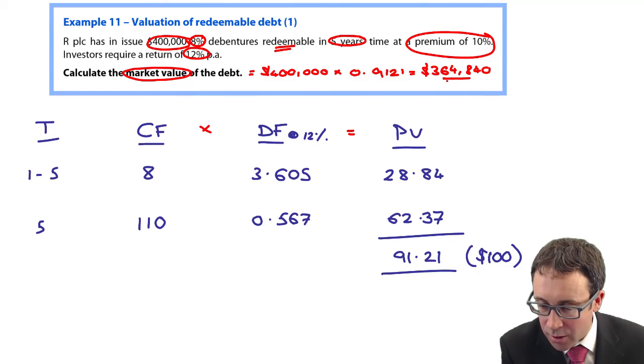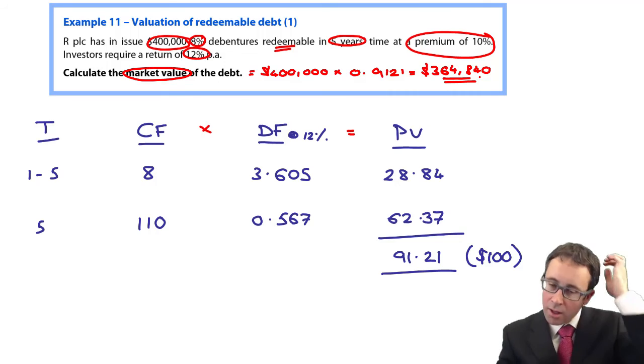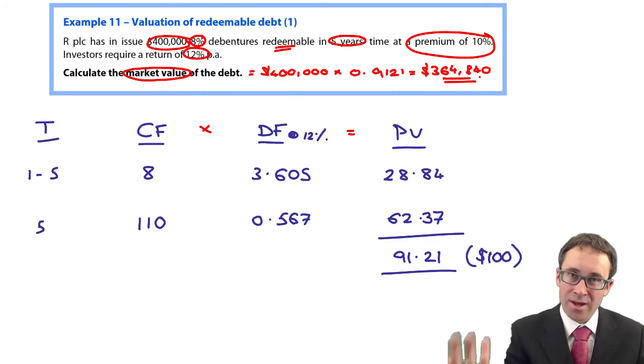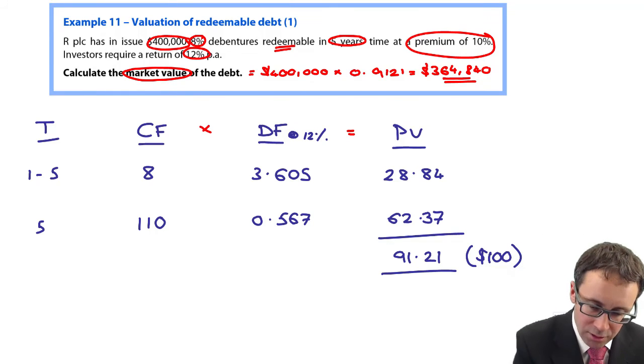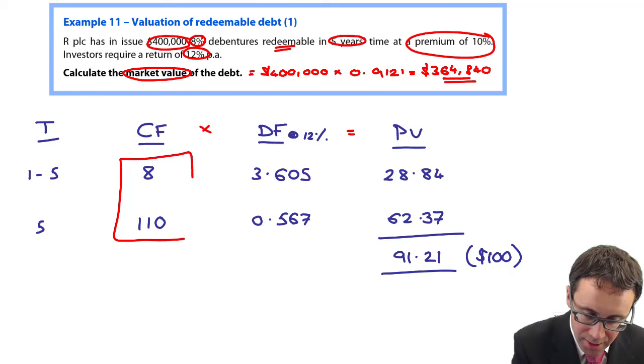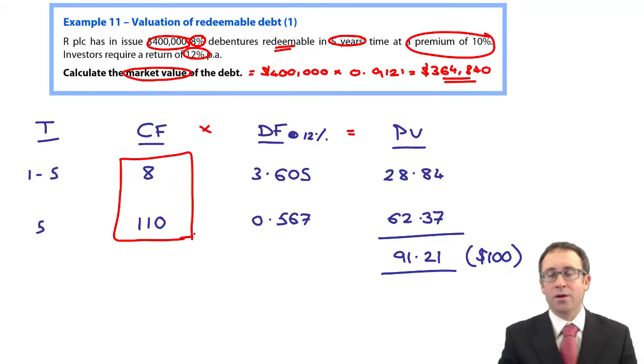There we go. Again, the questions will either ask you to work out based upon a block of $100 or to work it out in total. The key bit is whichever way you're having to do it, whether per block of $100 or in total, just stick with the cash flows based upon your block of $100. It makes the computations much more straightforward.